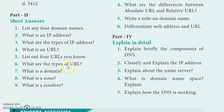Question 6: What are the types of URLs? There are two types of URLs: Relative URL and Absolute URL.